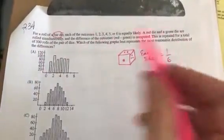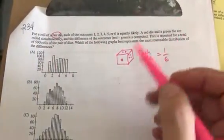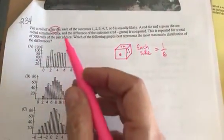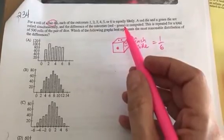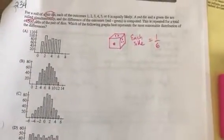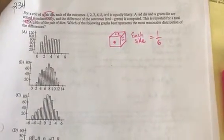Now, it says a red die, so probably just the colors are just for us to keep them apart. A red die and a green die are rolled at the same time. And the difference of the outcome is red minus green. This is repeated many, many, many times. So we know that that is a very big number. What graph would represent those differences?